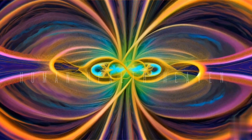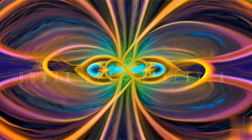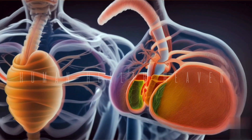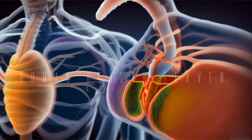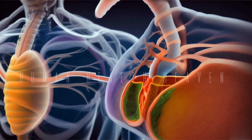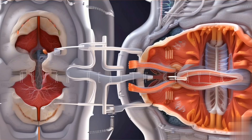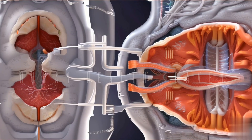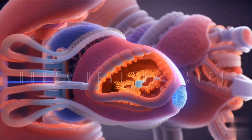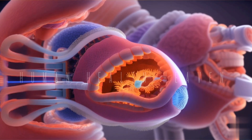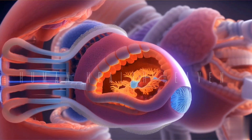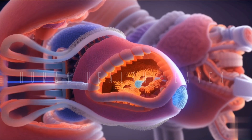Pleura is a specialized membrane that plays a crucial role in covering and protecting essential components of the respiratory system, particularly the lungs. Double-layered membrane: the pleura consists of two layers, the parietal pleura and the visceral pleura. The parietal pleura lines the inner surface of the chest wall, while the visceral pleura covers the outer surface of the lungs.